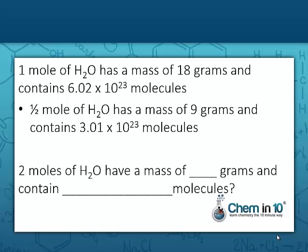Let's consider two moles. Two moles of water would have what mass and contain how many molecules? If you guessed that two moles of water would contain twice the mass of one mole of water, or 36 grams, you'd be right. And it would contain twice the number of molecules. If one mole contains 6.02 times 10 to the 23rd molecules, then two moles would contain twice as many, or 1.204 times 10 to the 24th molecules.